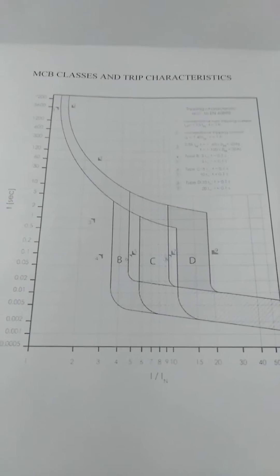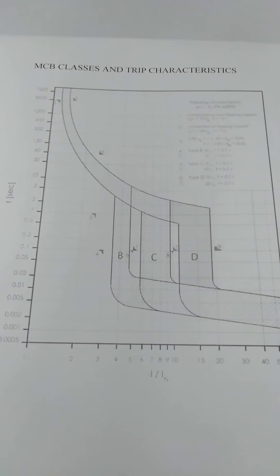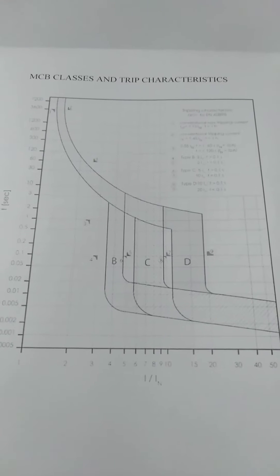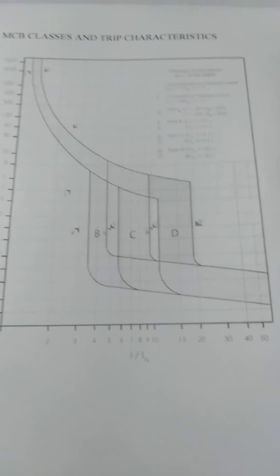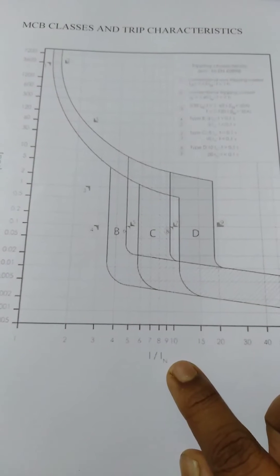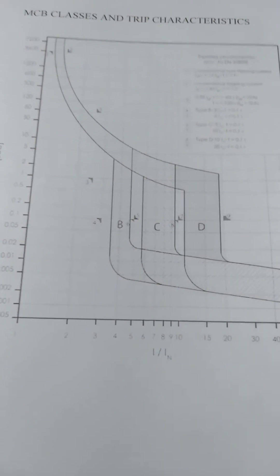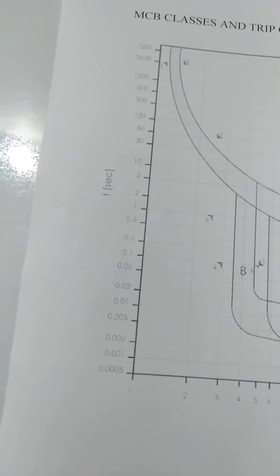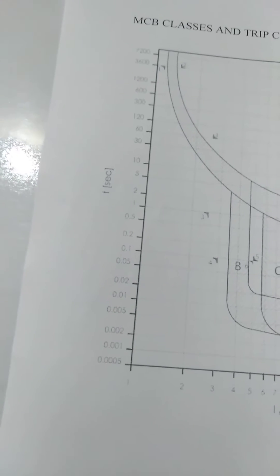As you can see here, the major classes of MCB are B, C, and D. There are other classes such as K and Z, but we don't consider them here. On the X axis, we have current times nominal current, that is the fault current by nominal current, which is the current multiplier. On the Y axis, we have time in seconds, that is the trip time.